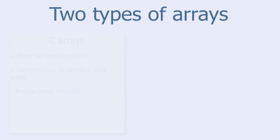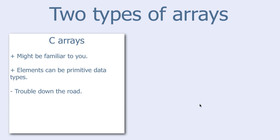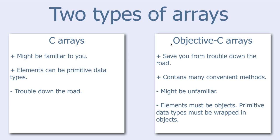There are two types of arrays you can use. The first type is C arrays. If you have a background in C programming, these types of arrays are familiar to you. The elements inside C arrays can be of primitive data types like integers, characters, and so on. But the disadvantage of C arrays is that you will have trouble down the road. The other type is Objective-C arrays. They will save you from trouble down the road and contain many convenient methods that you will not want to be without once you get to know them.